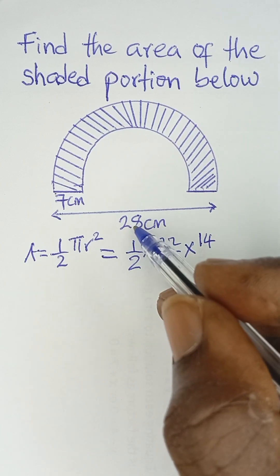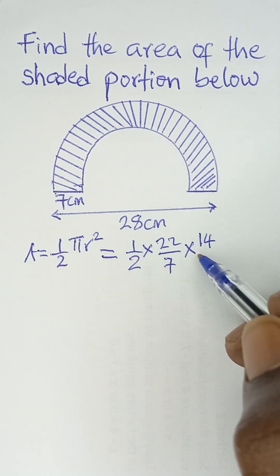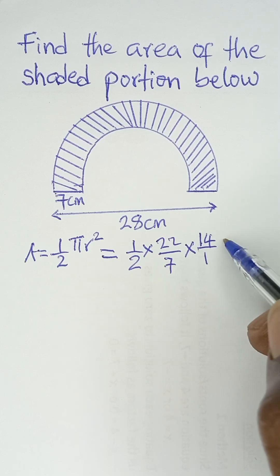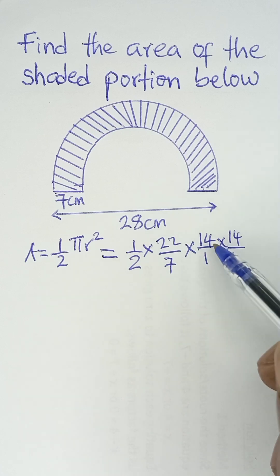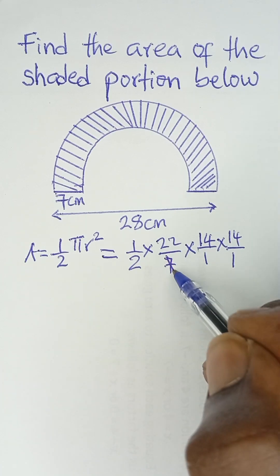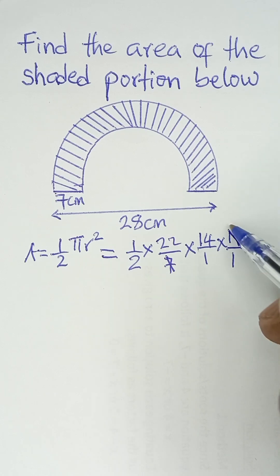Don't forget, the radius is 14. That is 28 divided by 2. So 14/1 times 14/1. That is, r² simply means you multiply the radius 2 times. So 14 times 14. 7 here 1 and 7 here 2.